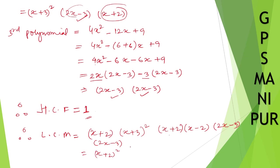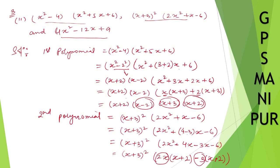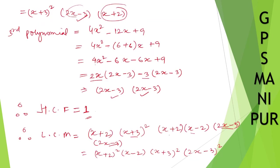Next, (x-2) appears in the first polynomial, so write (x-2). Then (2x-3) squared comes from the third polynomial. So the LCM equals (x+2) squared times (x-2) times (x+3) squared times (2x-3) squared. I hope I haven't made any mistakes — if you see any, please tell me. Thank you, we'll meet in the next video.